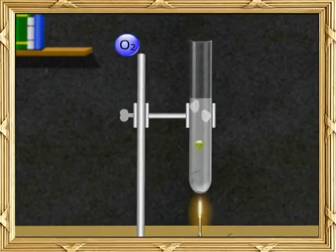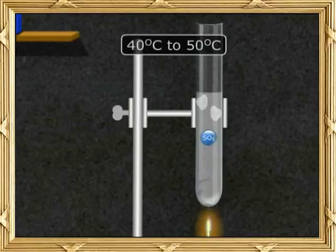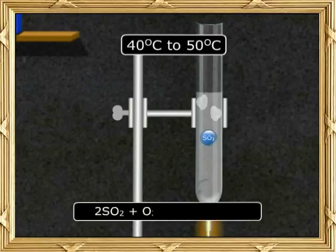Addition reaction. Sulphur dioxide reacts with oxygen in the presence of platinum catalyst at 40 to 50 degrees Celsius to form sulphur trioxide. 2SO2 plus O2 will give you 2SO3.